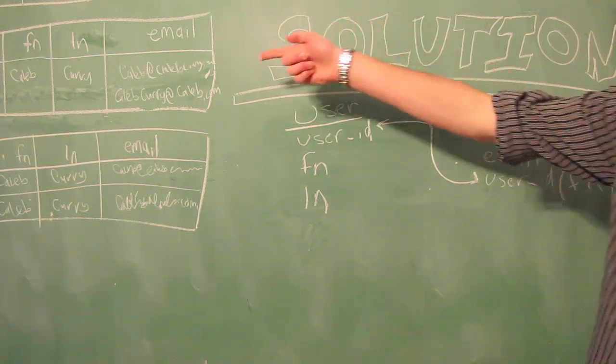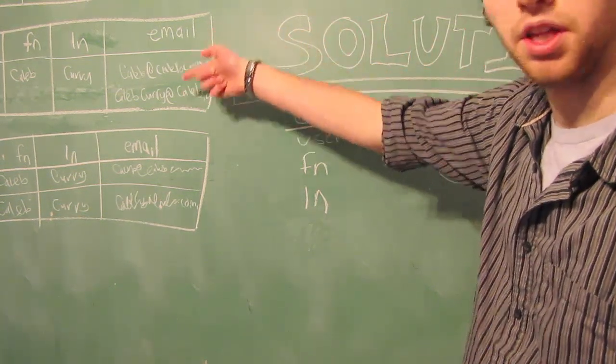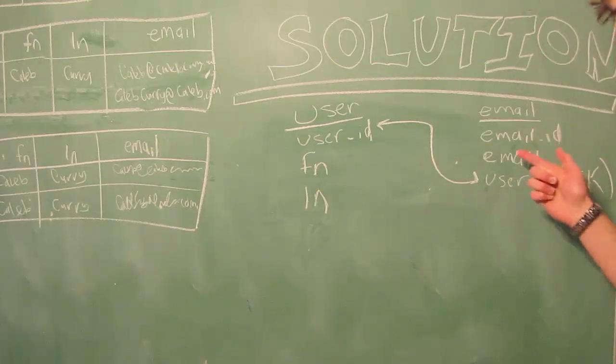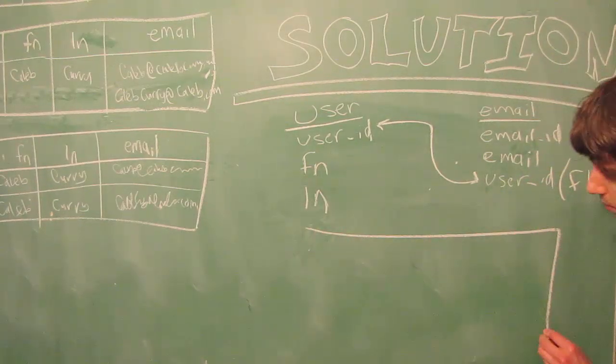Now if we wanted to put two individual emails, we could have rows within this email table. Let's spread out the email table and see what it might look like.